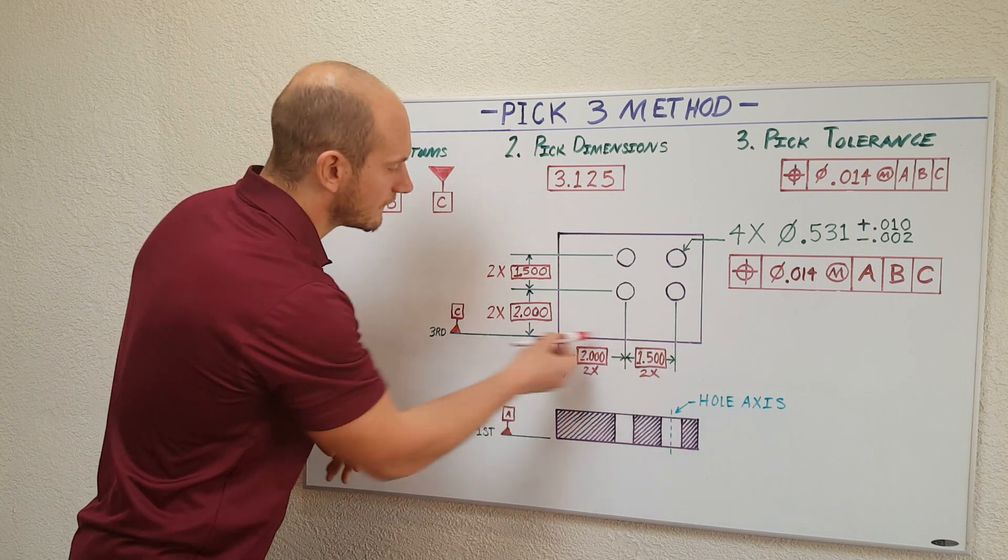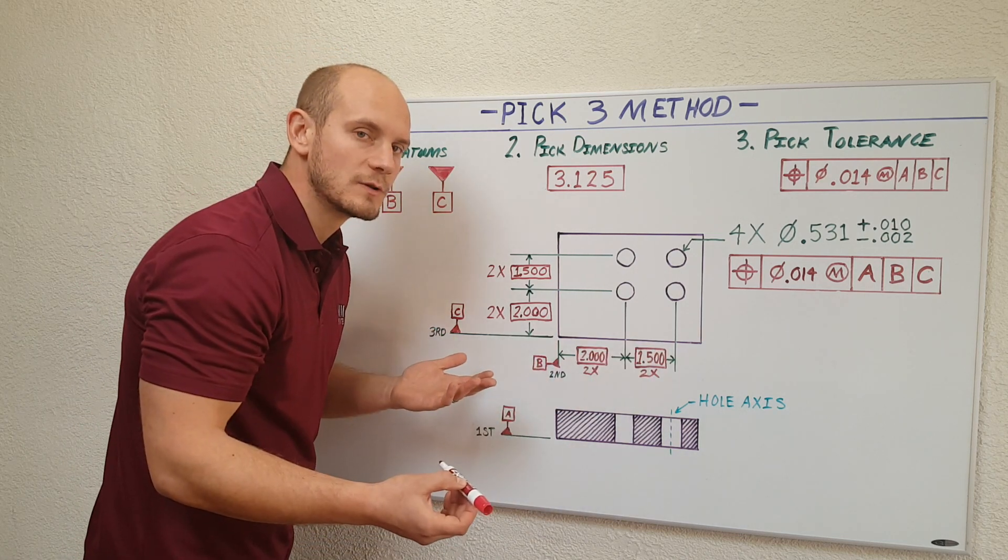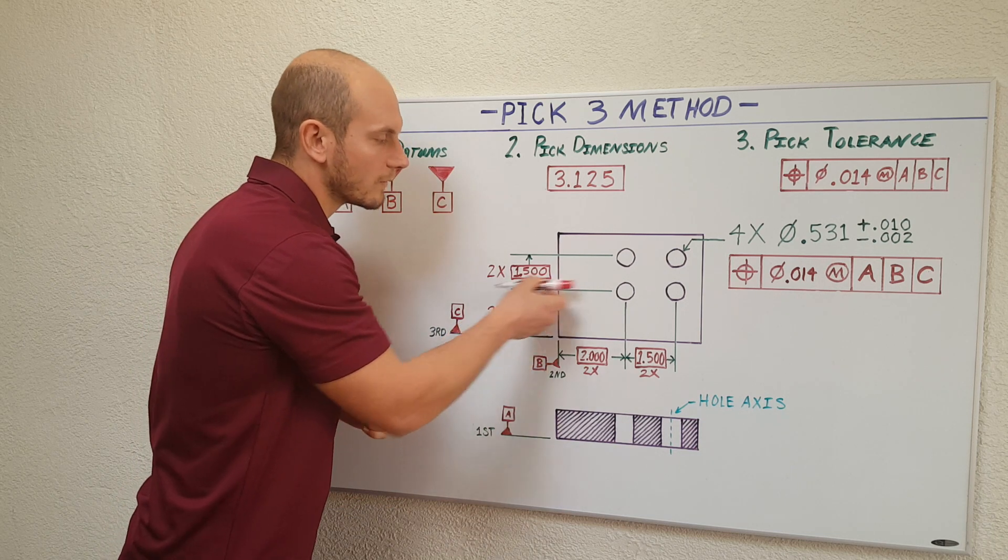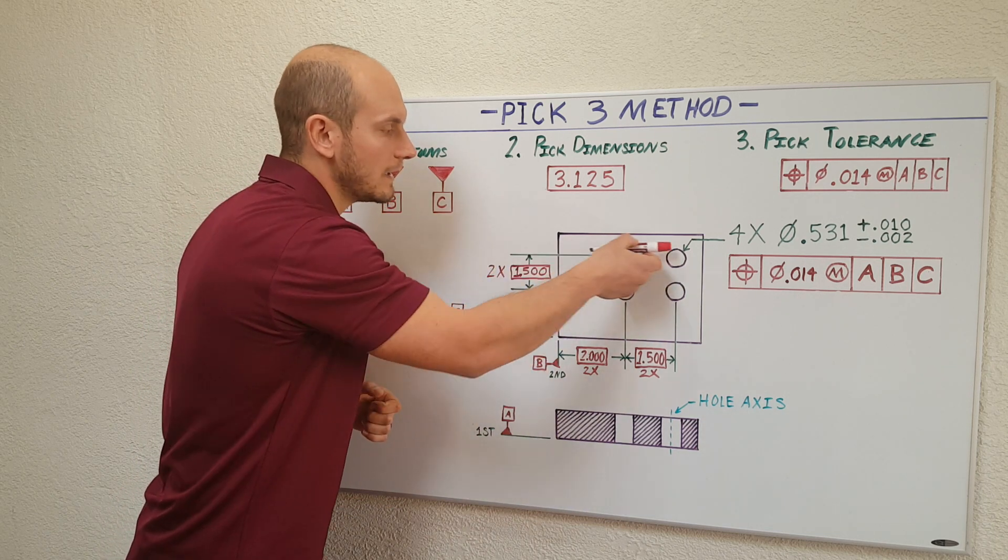Third datum, this surface here, once again similar to B. I'm telling the machinist I want you to start at this surface and move upwards to locate each set of holes in the pattern.